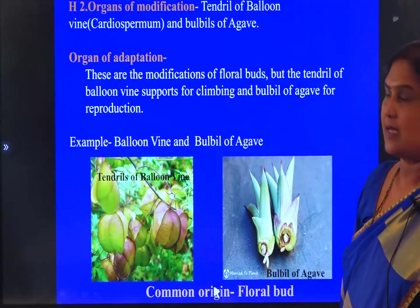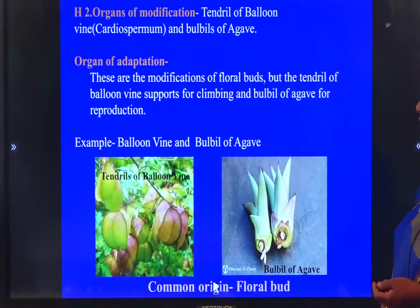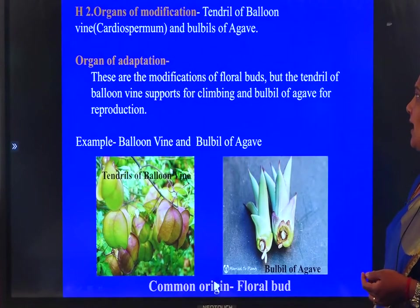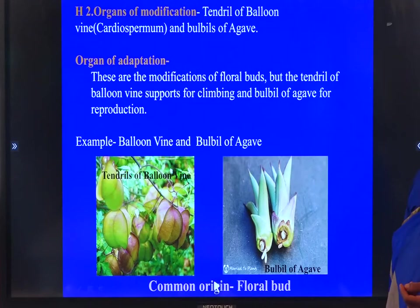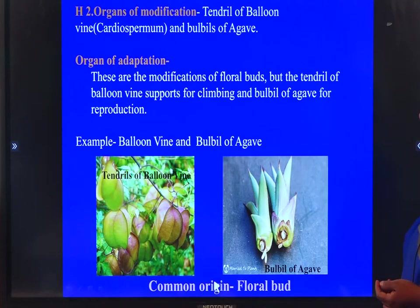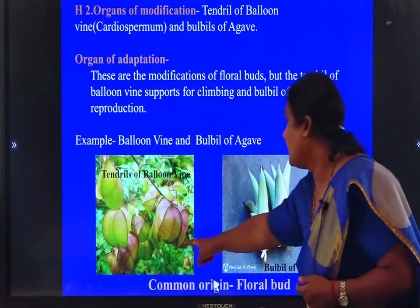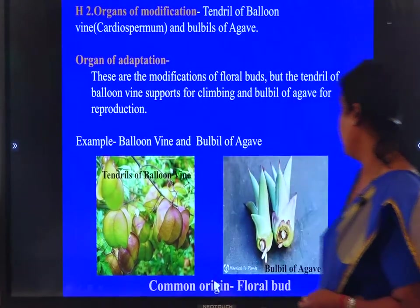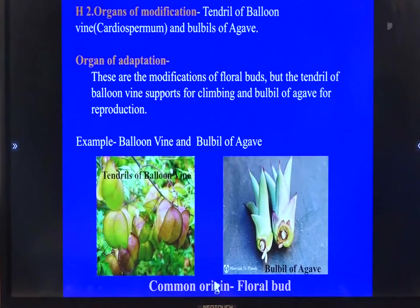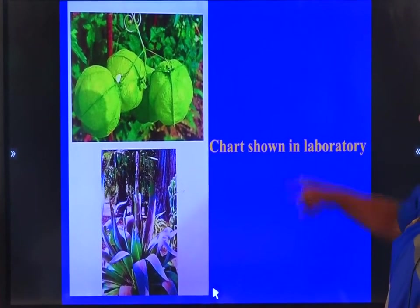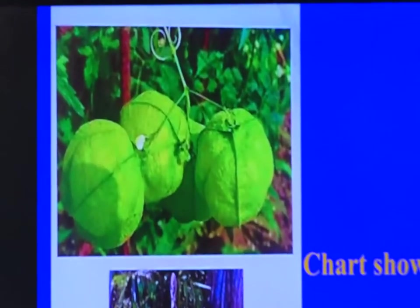Next, homologous organs — example two. The organs of modification here are the tendril of balloon vine, also called Cardiospermum, and bulbils of Agave. These are modifications of floral buds. The tendril of balloon vine supports climbing, but the bulbil of Agave helps in vegetative propagation. You can see the tendrils here, and here is the bulbil — the modified floral bud for vegetative propagation. This is the chart available in our laboratory which is placed during the examination.